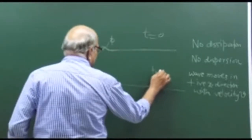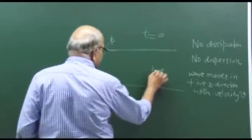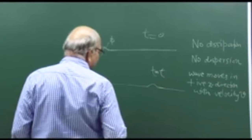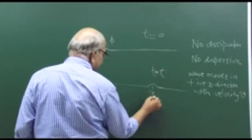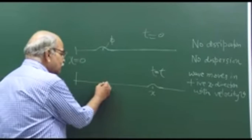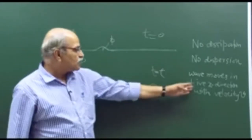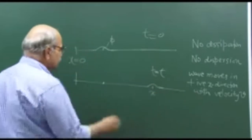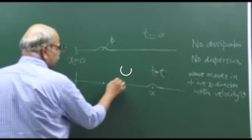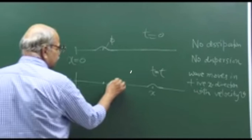Let this configuration be at time t = 0 and the later one at time t. A particular point on the wave that was at position x at t = 0 has moved to a new position. Since the wave is moving in the positive x direction with velocity v, the distance it has travelled is v·t.